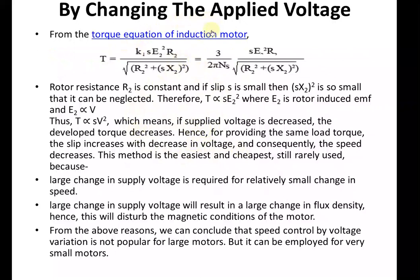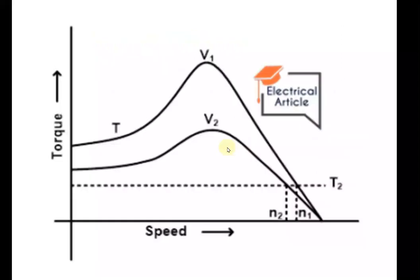The disadvantage of the changing applied voltage method is that a large change in supply voltage is required. Suppose you want to control a speed of 20 to 30 rpm — hundreds of volts need to be decreased. So a large change in supply voltage is required for a relatively very small change in speed. This large change will cause a large change in flux density, which will disturb the magnetic conditions of the induction motor. Because of such reasons, the changing applied voltage method is not so convenient.